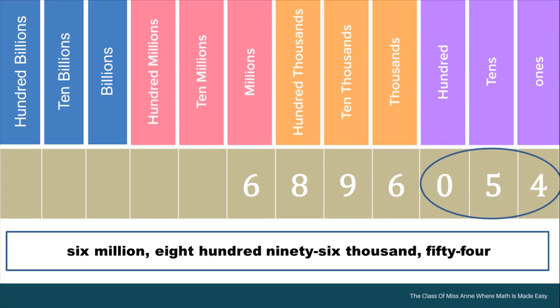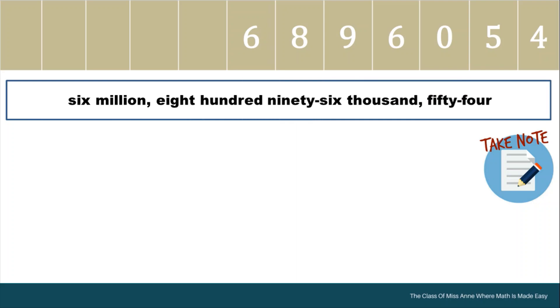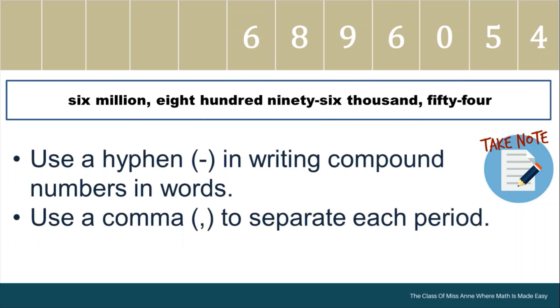Therefore, this number is read as 6,896,054. Same rule applies. Use a hyphen in writing compound numbers in words. And use a comma to separate each period. Here, we use two commas since we need to separate three periods.